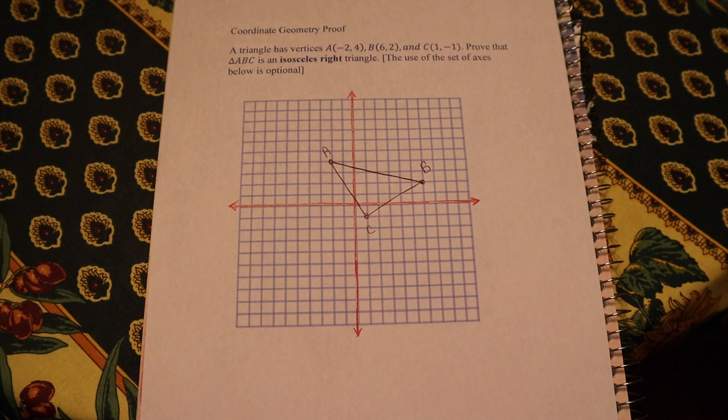Today we're going to be looking at a coordinate proof, and specifically with this coordinate proof, we're wanting to show that triangle ABC is an isosceles right triangle.